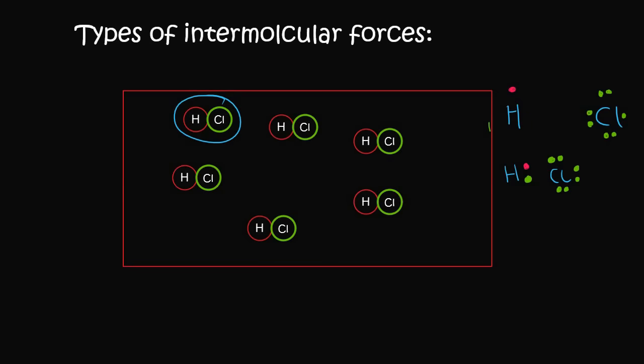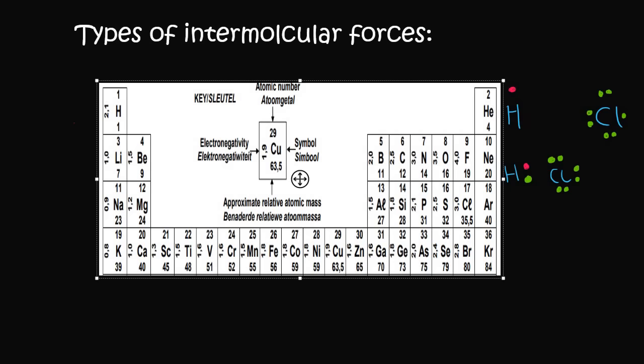To determine whether the molecule is balanced or not, we need to look at the electronegativities, and for that we use the periodic table — you don't need to memorize those numbers. Hydrogen has an electronegativity of 2.1 and Cl is 3.0. The difference is 0.9, so we can confidently say this is a covalent bond because it's less than 2.1. Cl is higher than hydrogen, meaning Cl wants electrons more.